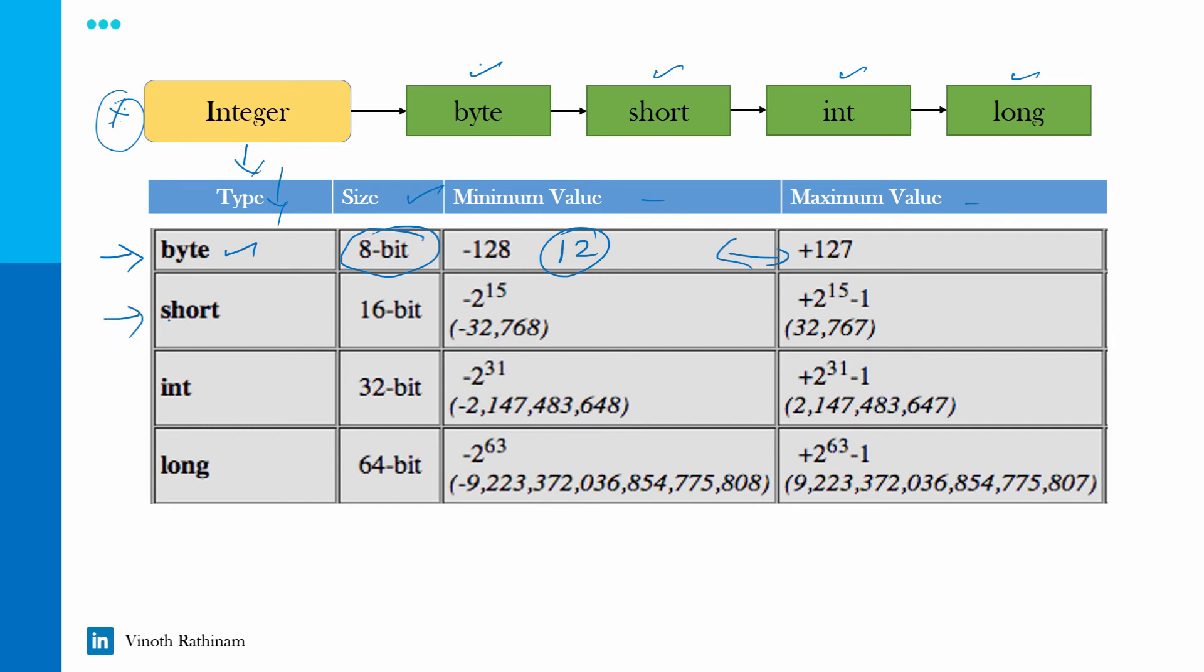Same for short. If the number range between these two values, then the third one int. Mostly all the automation project, we will be using int a lot. For example, the salary, employment numbers, all falls under the integer.